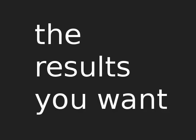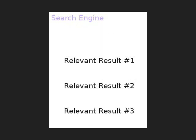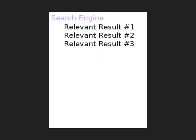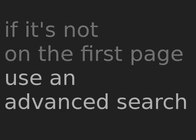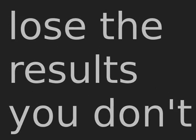When looking for information on the Internet, there are searches and there are advanced searches. Searches give you results. Advanced searches give you the results you want. They do this by filtering out irrelevant results and showing you only relevant ones. A simple rule of thumb: if you're not finding relevant results on your first page, you may need to use an advanced search. Get the results you want, lose the results you don't.